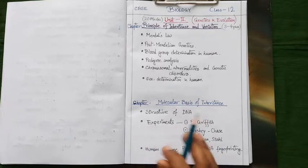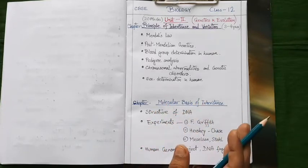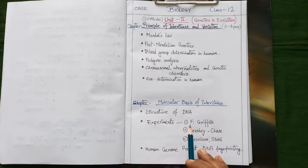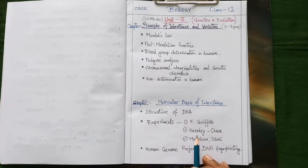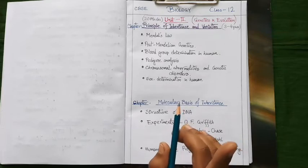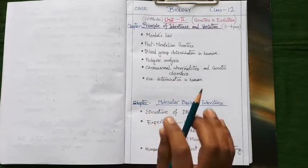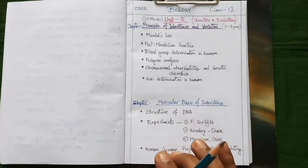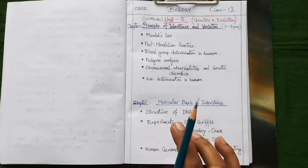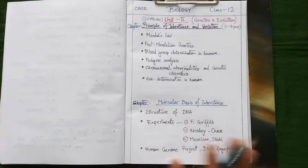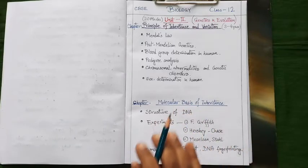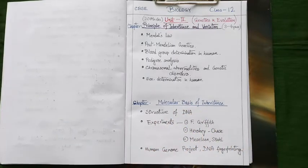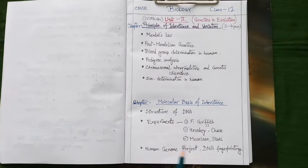Next, we have to memorize different experiments. There are different experiments in our textbook. The experiments of Frederick Griffith, Hershey-Chase, Meselson and Stahl. And you need to complete all these three experiments with very careful attention. Because you can easily expect any one experiment from these three experiments. Our next topic is human genome project and DNA fingerprinting. You can also expect any one question from these two topics.